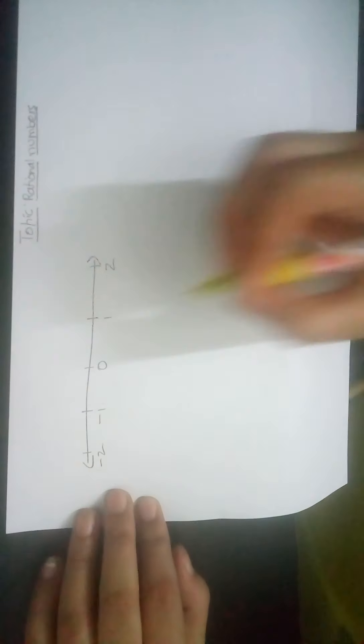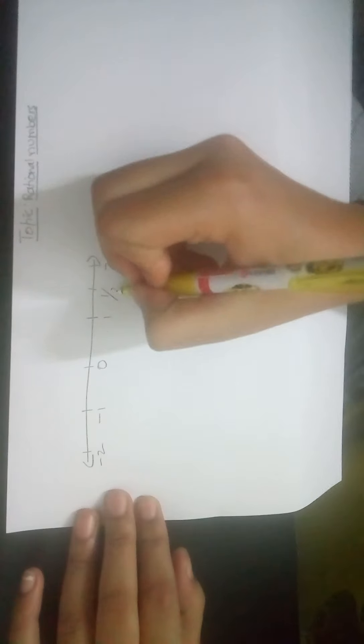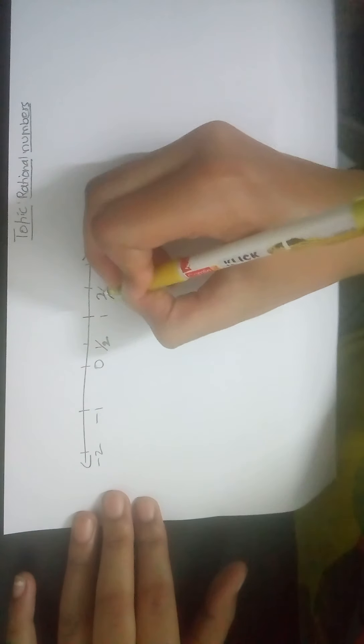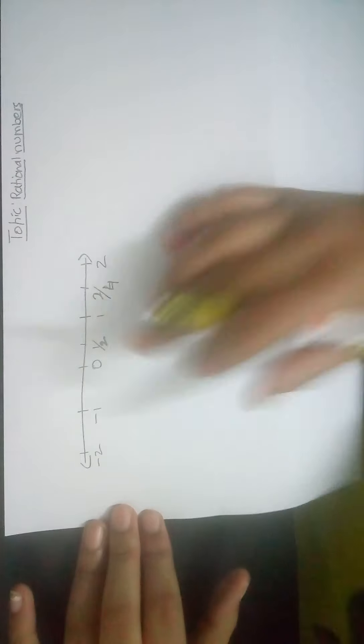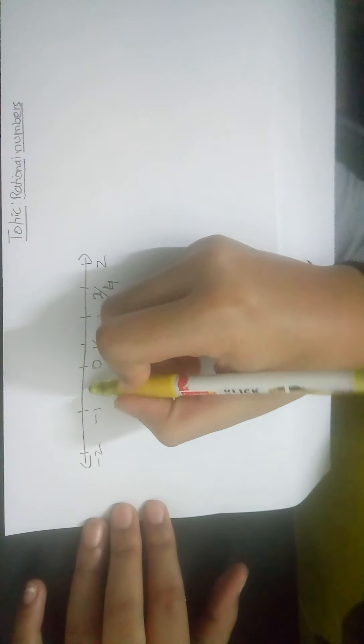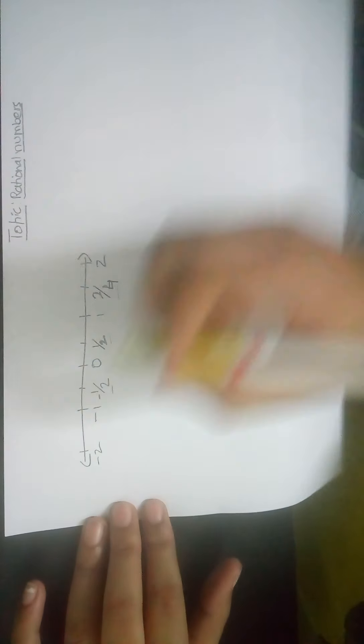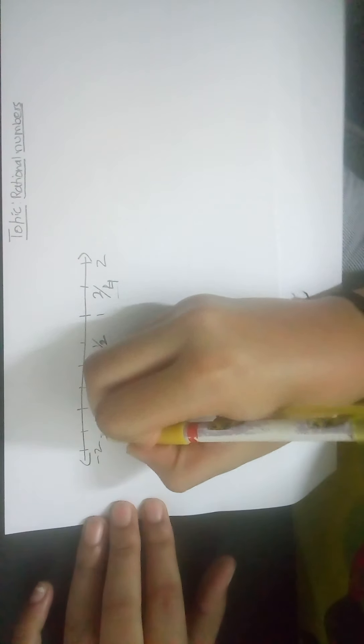If this is a number line with zero in the middle, you have the integers: minus one, minus two on one side, and one, two on the other. In between, you have one by two, which is a fraction. Two by four is also equal to one by two. On the negative side, it's also one by two but negative, so this is a rational number. These are also rational numbers, and even minus two by four is a rational number.